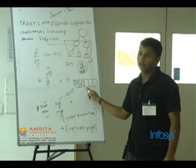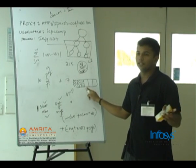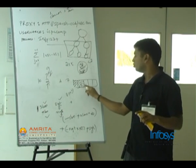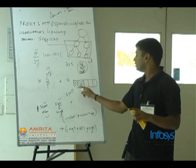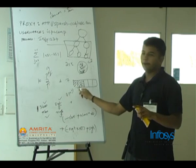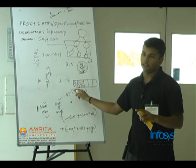This minus Xi means I am removing the modulus. This is greater, so it is this minus Xi. This is lesser, so it is Xi minus this — Xi minus this.